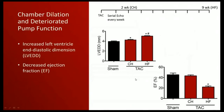The mice were operated by TAC and followed up by serial echocardiography every week. We selected two weeks post-TAC for compensated hypertrophy stage and nine weeks post-TAC for heart failure stage. Echo data confirmed that in both stages there is a massive increase in left ventricular end-diastolic diameter indicating hypertrophy, but ejection fraction is only deteriorated in heart failure while maintained in compensated hypertrophy.